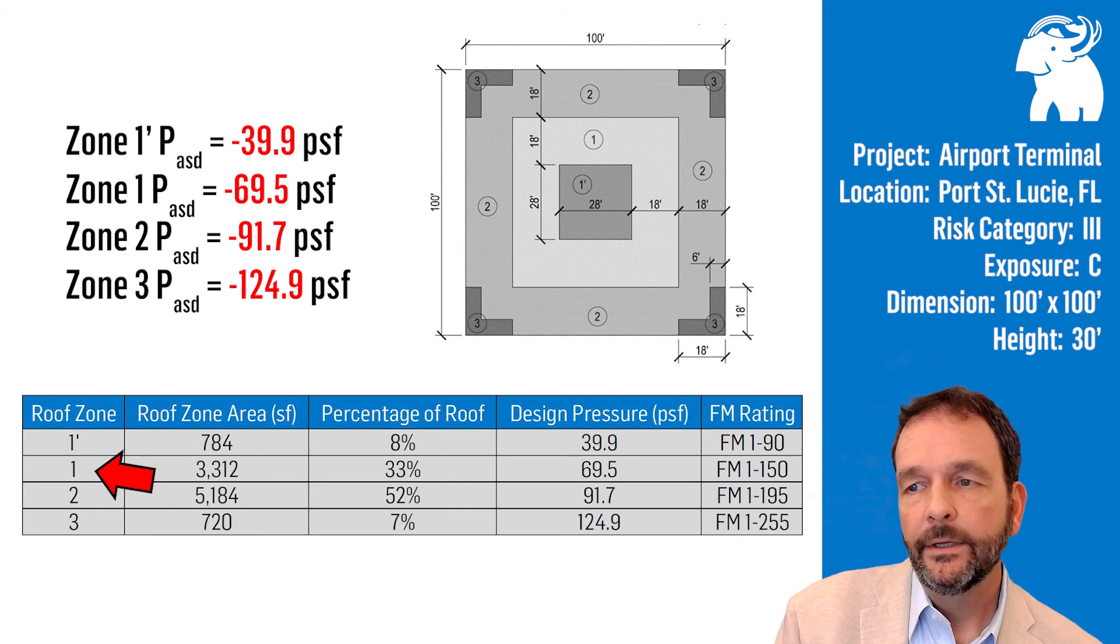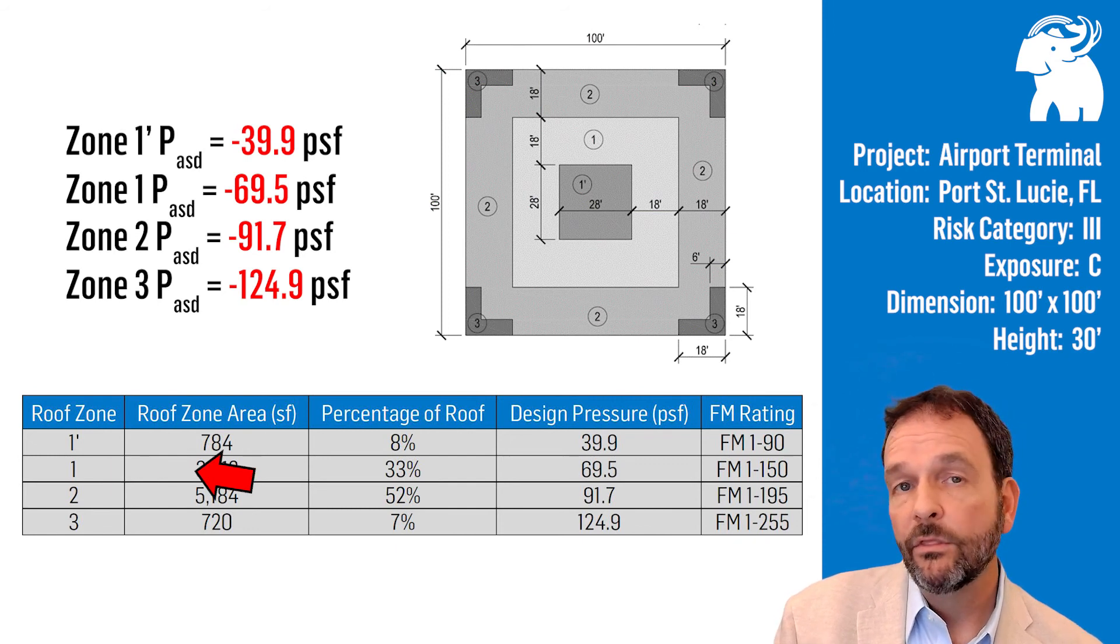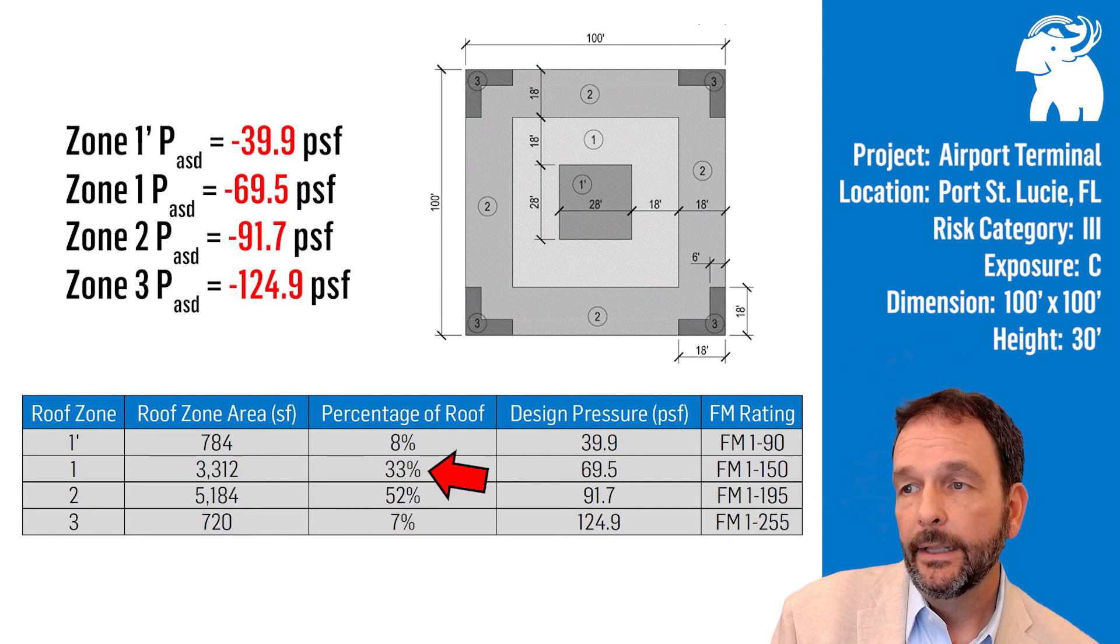For zone 1, the area represents about one-third of the roof area. The design pressure would be 69.5 PSF, requiring FM 1-150.